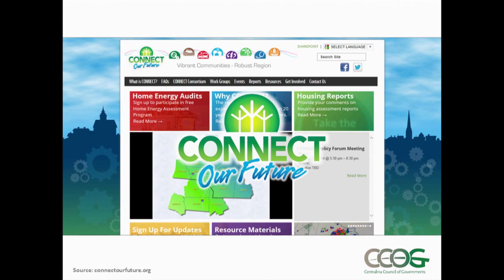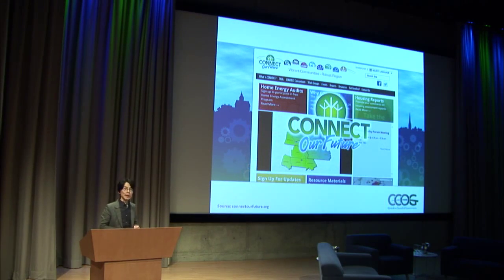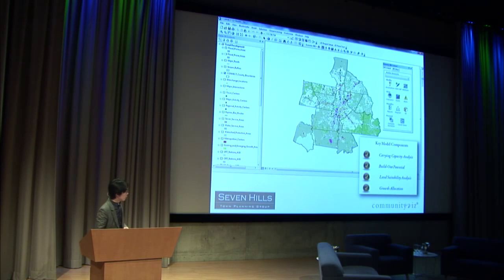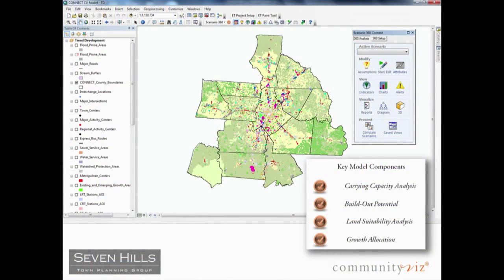The first project is called Connect Our Future, covering 14 counties across North and South Carolina. It is a regional visioning process with the goal of coming up with a shared vision to guide future growth in the region. They worked with a private consultant, Seven Hills Town Planning, to develop a GIS model using CommunityViz. The model allowed them to conduct development constraint analysis, study build-out potentials with suitability analysis, and eventually allocate future growth to the region based on all these analyses.